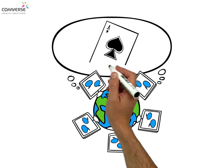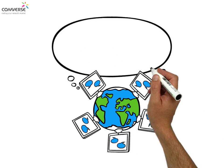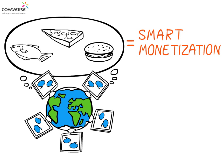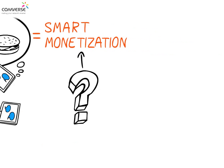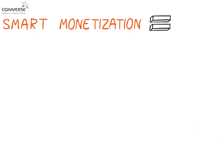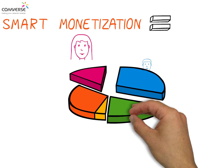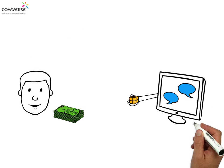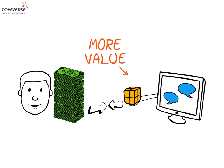Operators understand that a significant game-changer is required, and it is now available in the shape of offer differentiation, also known as smart monetization. What is smart monetization? It makes many important things possible: segmented plans and promotions, enhanced personalization, added value for over-the-top players, and more. The bottom line — the operator provides more value to its end users and thereby enhances its monetization capabilities.